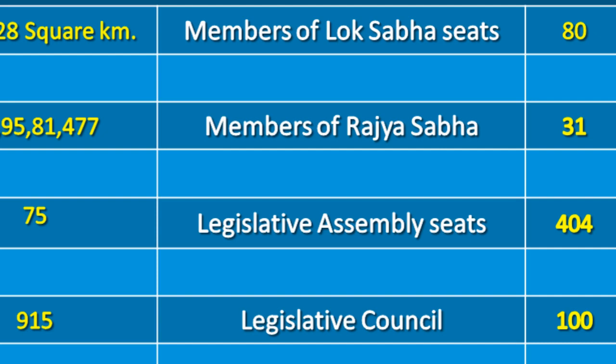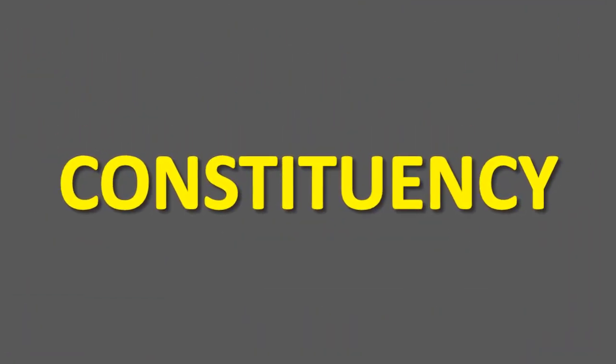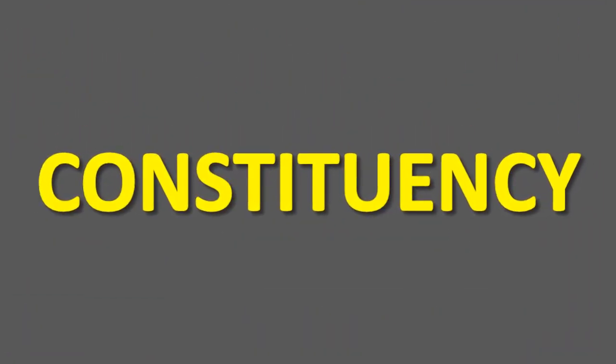Uttar Pradesh has a governor and a bicameral legislature. The lower house is called Vidhan Sabha, having 404 members, out of which 403 are elected and 1 nominated, and 100 legislative council members in Uttar Pradesh.